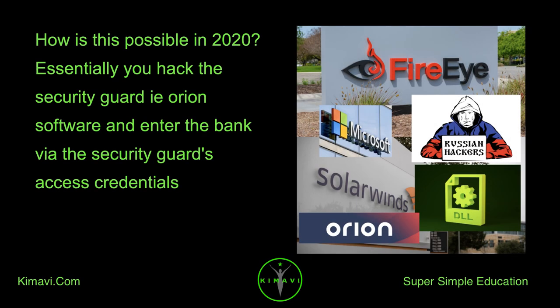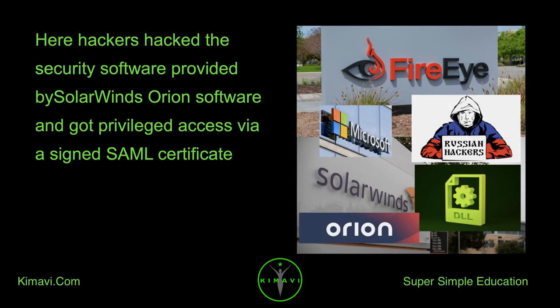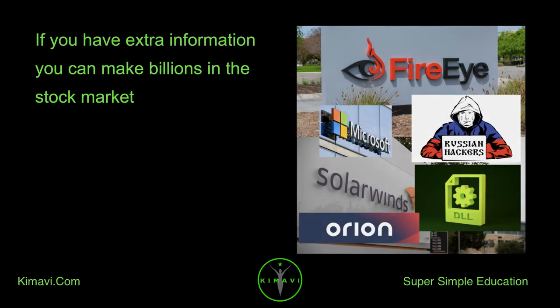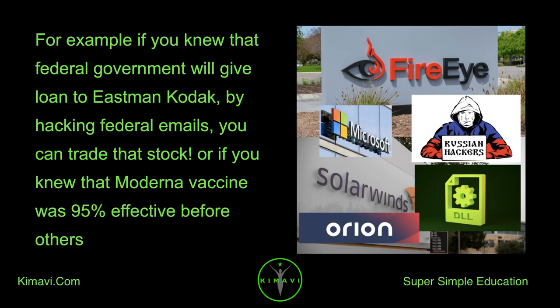How is this possible in 2020? Essentially, you hack the security guard — i.e., Orion Software — and enter the bank via the security guard's access credentials. Here, hackers hacked the security software provided by SolarWinds, and got privileged access via a signed SAML certificate. For example, if you knew that the federal government would give a loan to Eastman Kodak by hacking federal emails, you could trade that stock. Or if you knew that Moderna's vaccine was 95% effective before others — you got it.